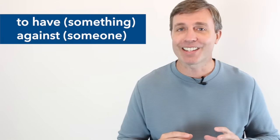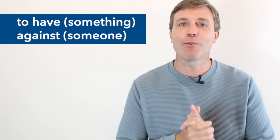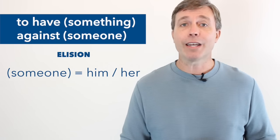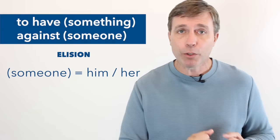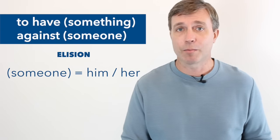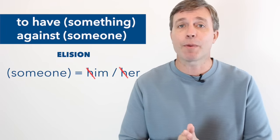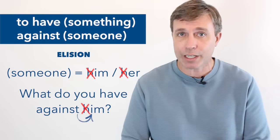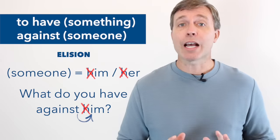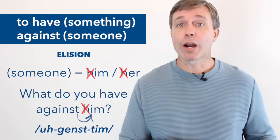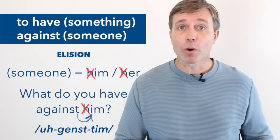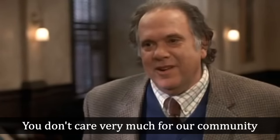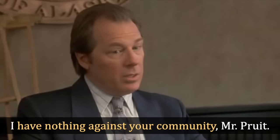But if we're talking about the pronunciation of this phrase, I'd like to point out that elision may occur if the someone is him or her. And elision is when you remove a certain sound or even syllable. So in this case, we're talking about that H in him or her. And if it gets removed, well, then we can link that final T in against with the vowel sound. So it'll sound like against him or against her. What do you have against him? What do you have against her? And elision may occur when you're pronouncing this phrase. You don't care very much for our community, do you, Mr. Walsh? I have nothing against your community, Mr. Pruitt.